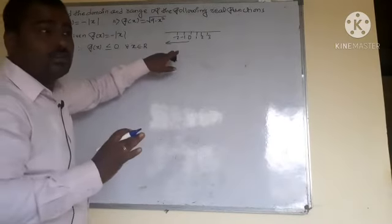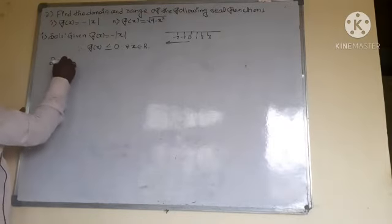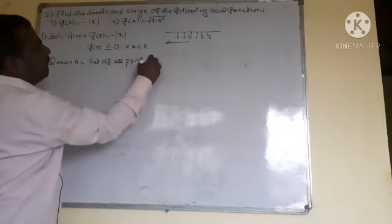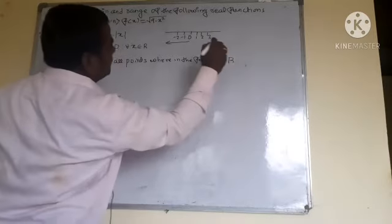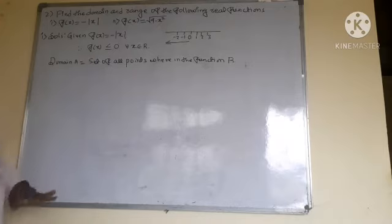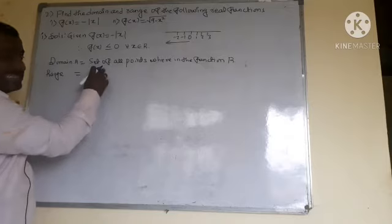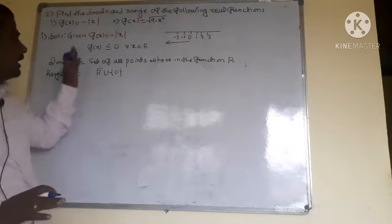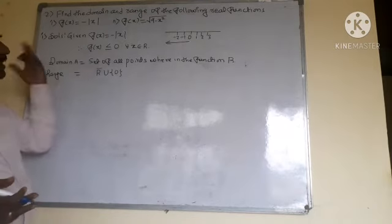It represents the number line. Domain is the set of all points where the function exists - all points in R. The domain is R, which means negative real numbers. I can express this as negative real numbers along with union 0, because negative real numbers are already proved. This is the domain.